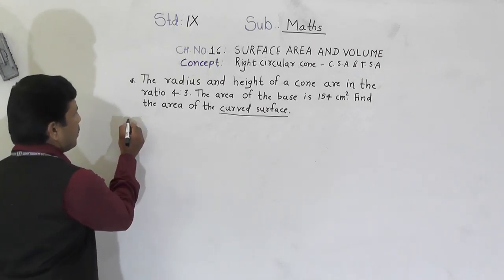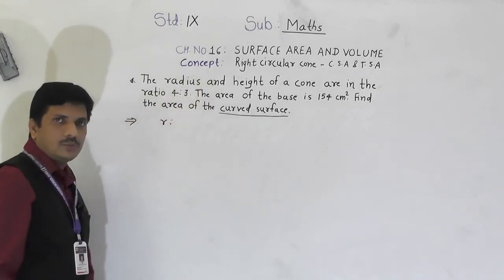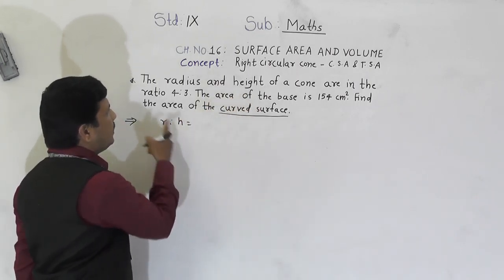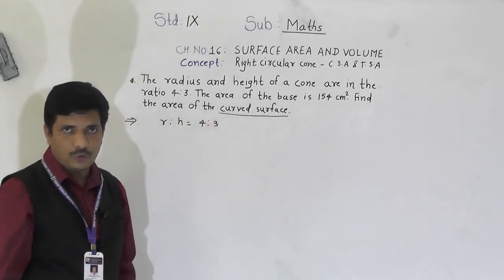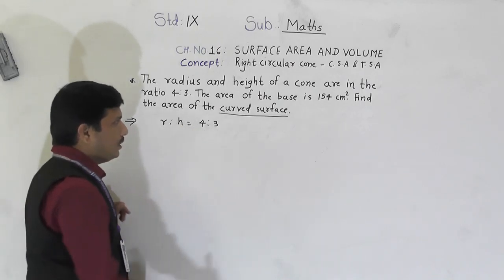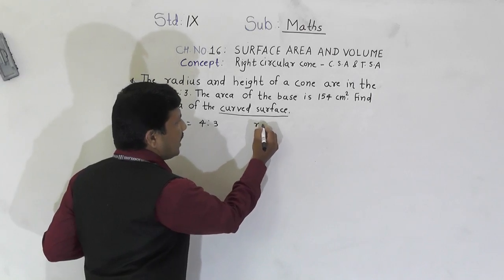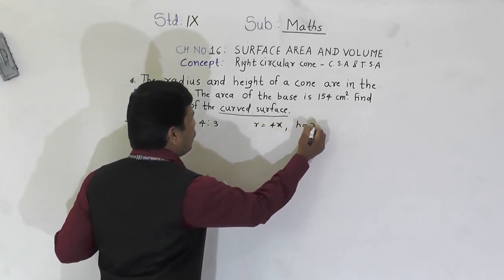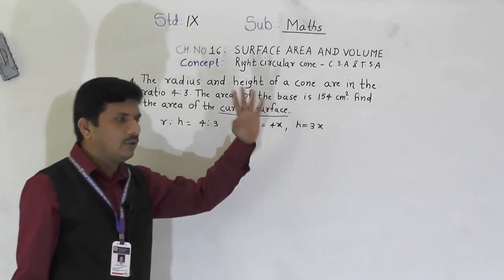What is given here: the ratio of radius r to height h is 4:3. So whenever ratios are given, we use a variable. We take radius r = 4x and height h = 3x.